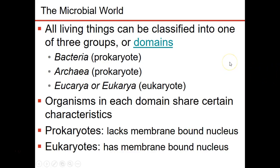In this last section we're going to be talking about the different groupings of microorganisms. We can group microbes into one of three domains. Domains are the largest classification that we have. Two of those domains are called prokaryotic domains — bacteria and archaea — and then we have one eukaryotic domain called eukarya. The organisms in each domain are going to share specific characteristics.